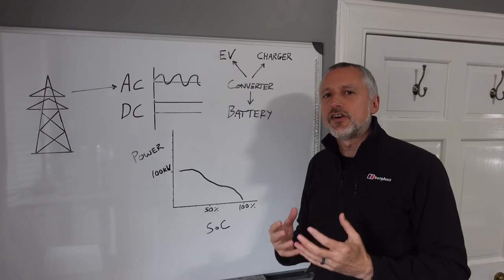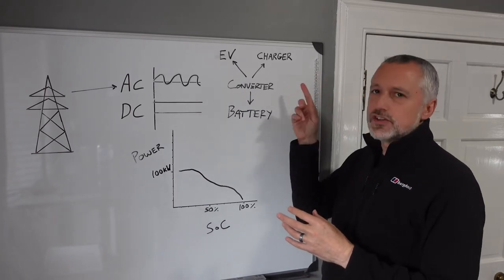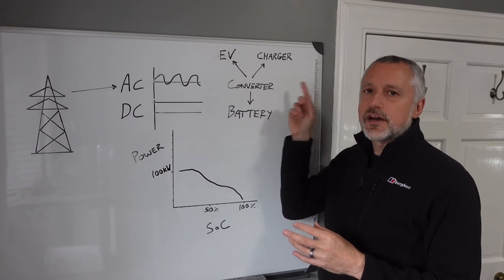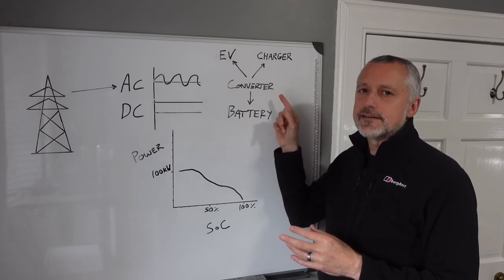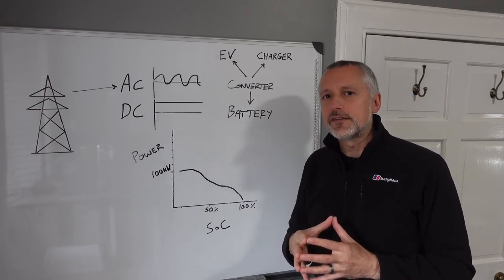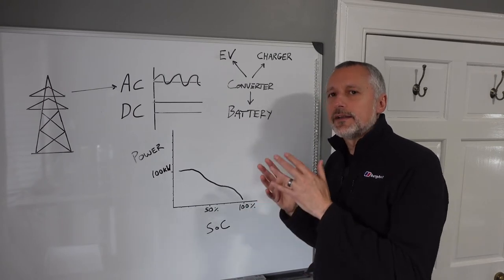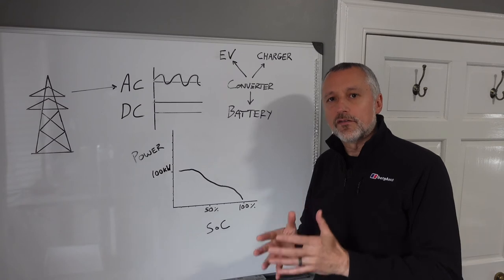So let's talk about DC charging. As we said earlier, what happens in DC charging is the charger itself converts the AC from the grid into DC, and then that goes directly into the battery at very fast speeds - so 50 kilowatts and above. However, it's important to understand the capability of your car.